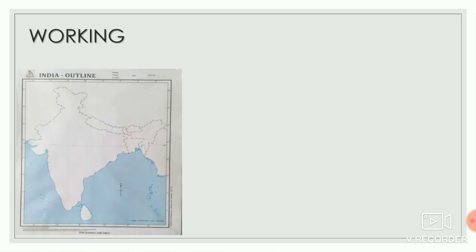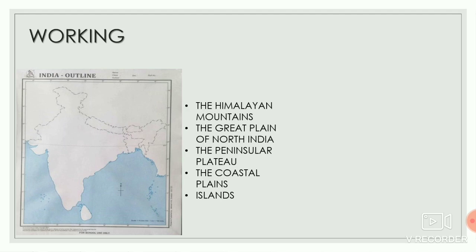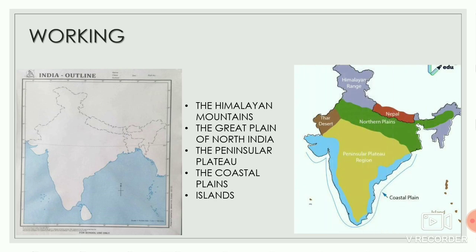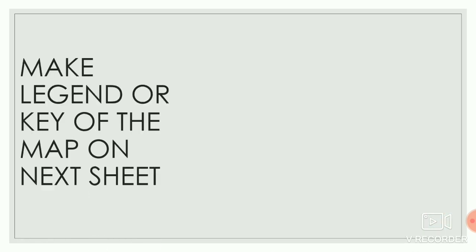To perform this activity, take a physical map of India and locate the physical or geographical features like the Himalayan mountains, the great plains of North India, the peninsular plateaus, the coastal plains, and islands on the map of India. Use different colors for different features. You can take the help of the map shown on the screen.